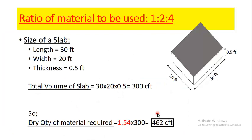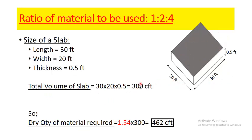The ratio of material to be used here is 1:2:4 — 1 is for cement, 2 is for sand, and 4 is for crush or coarse aggregate. Now let's assume the dimensions of a slab: its length is 30 feet, its thickness is 0.5 feet or 6 inches, and its width is 20 feet. Multiplying all three dimensions gives us 300 cubic feet, which is the wet volume of concrete.